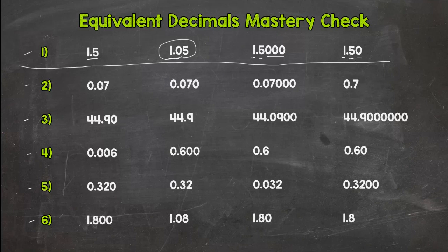Number two looks like we have a seven in the hundredths, hundredths, hundredths, and then we have a seven in the tenths. So this one is the odd man out. Seven tenths is not equivalent to the other decimals.